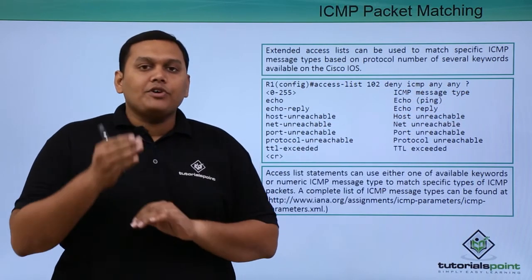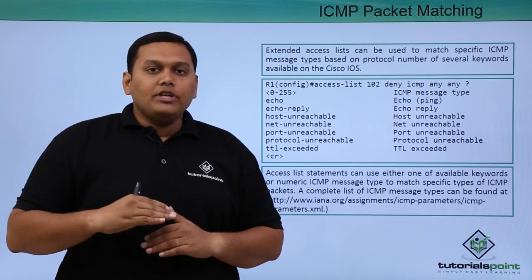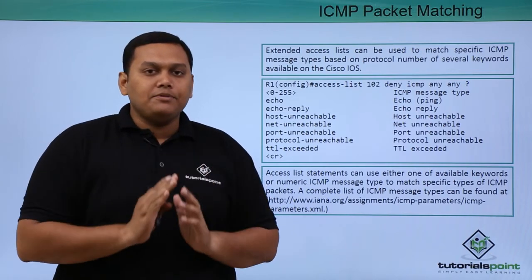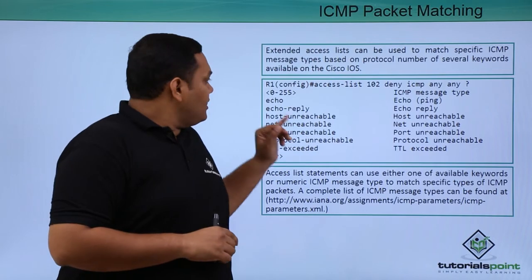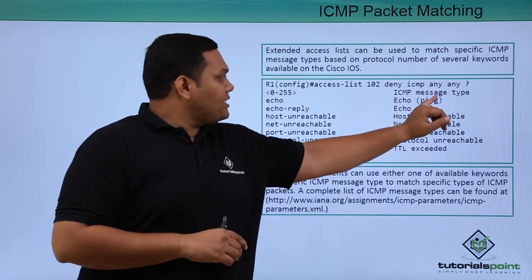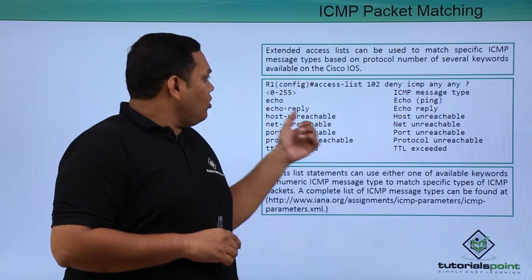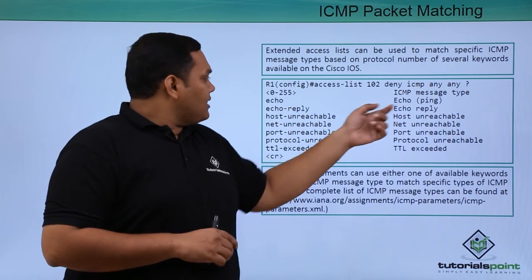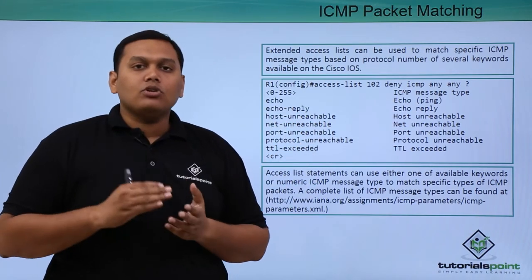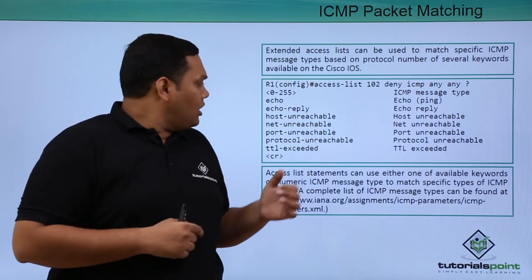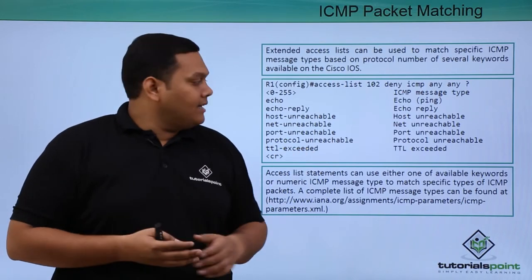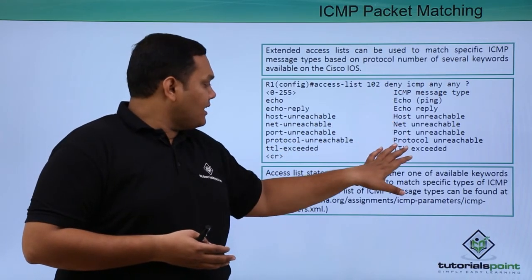When you enter the question mark, it gives you information on all available message types — 0 to 255 — which are the ICMP message types: echo, echo reply, host unreachable, port unreachable, protocol unreachable, and TTL exceeded. This information is clearly provided.